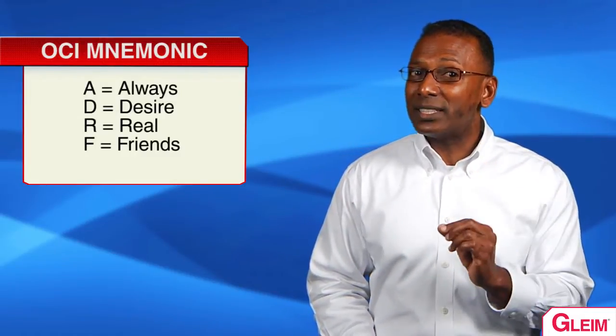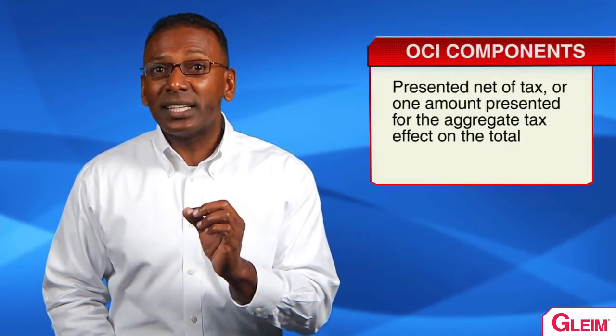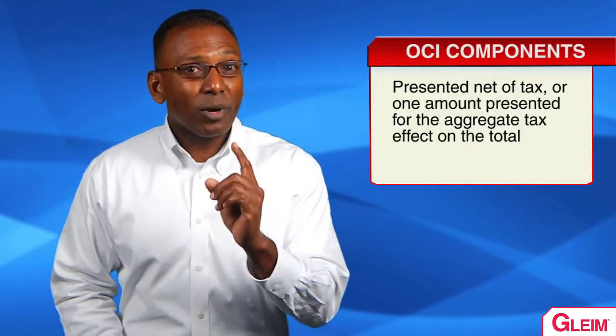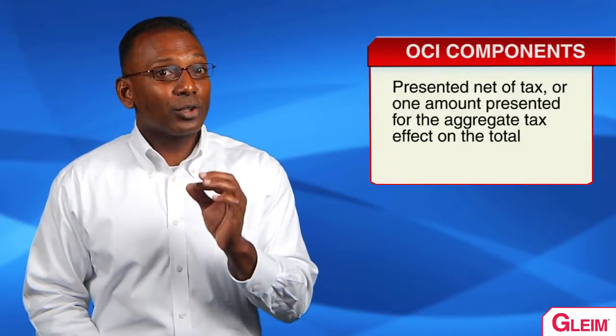A memory aid to remember OCI items is ADRF, which stands for 'Always Desire Real Friends.' A is for available-for-sale, D is for derivatives, R is for retirement, F is for foreign currency. Each component of OCI must be presented net of tax, or one amount must be presented for the aggregate tax effect on the total of OCI. An entity presenting a full set of financial statements has the option of either one continuous financial statement or two separate but consecutive statements.